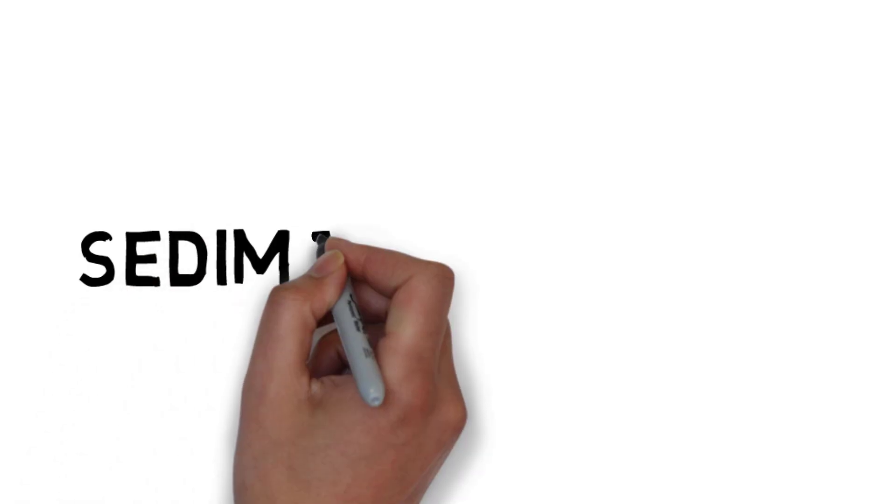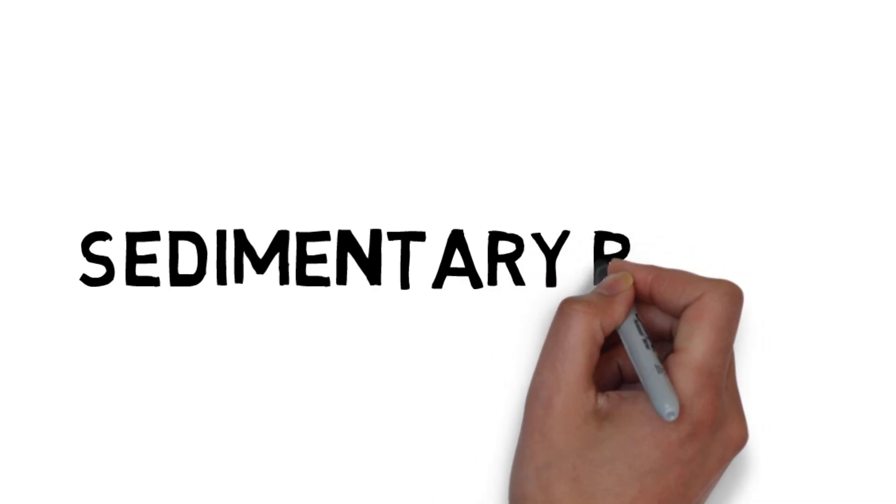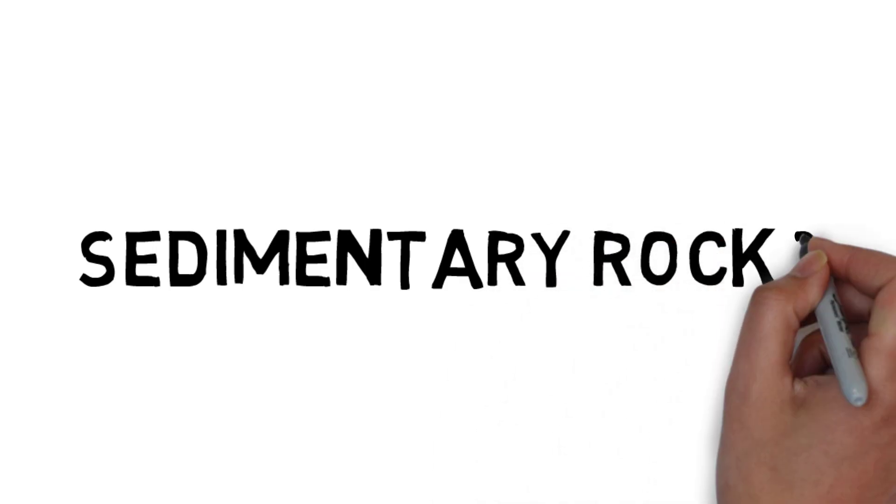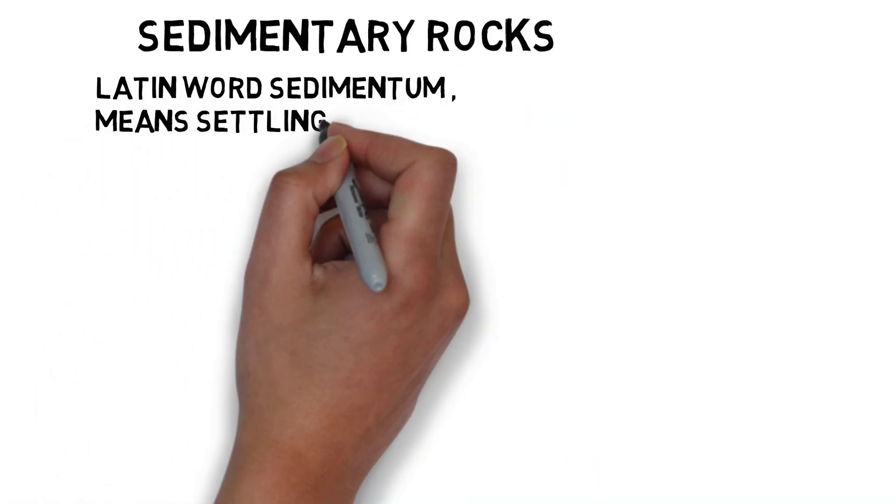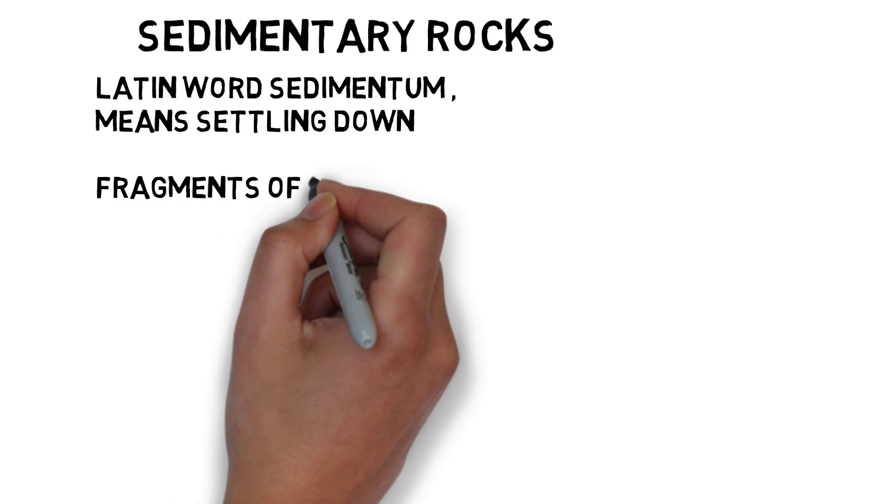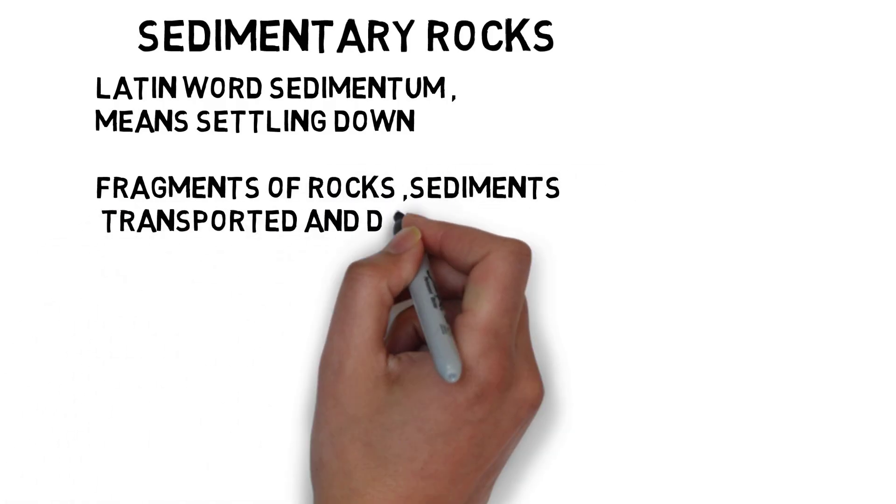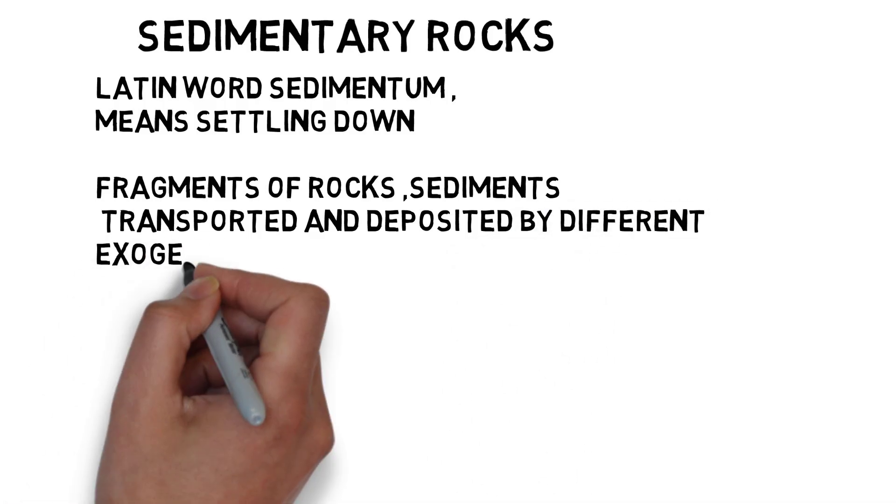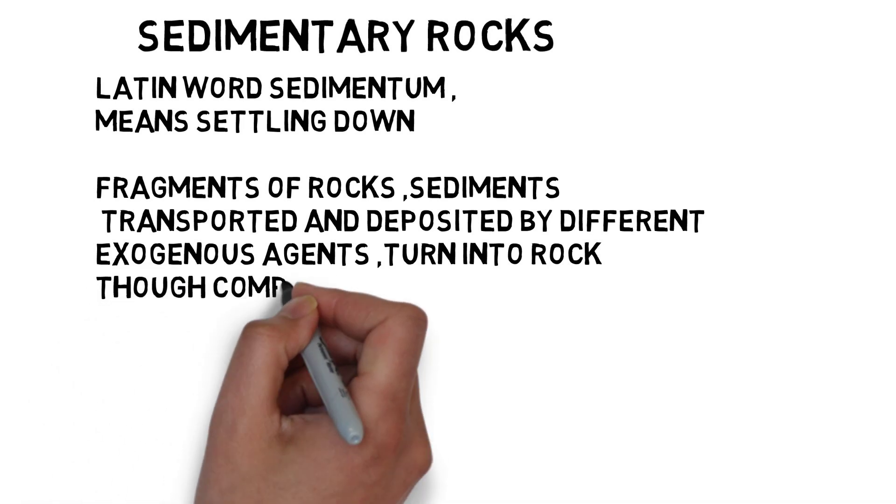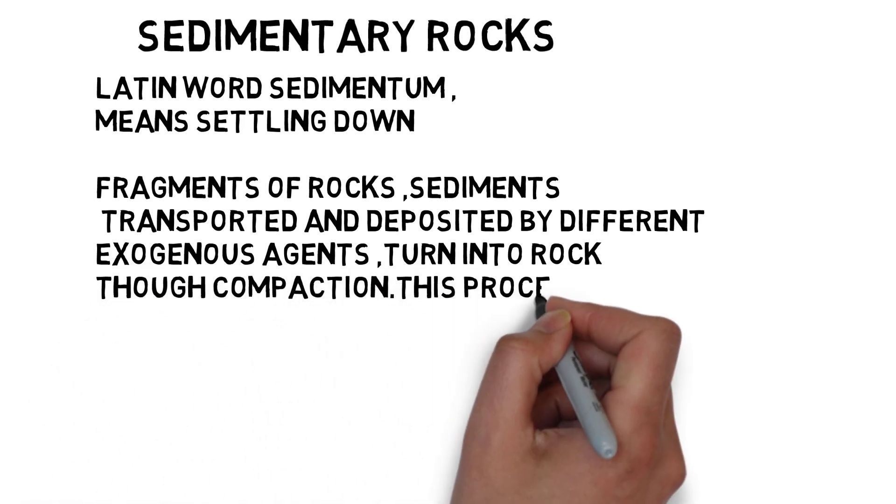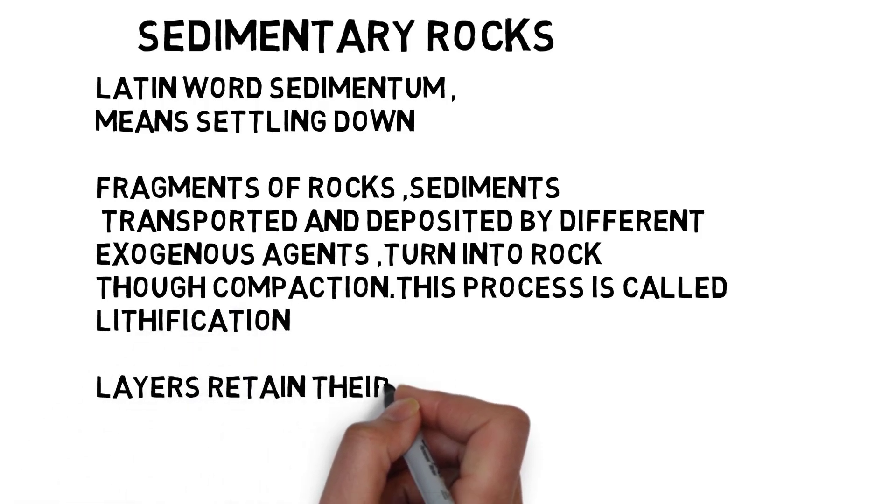Now let us come to the sedimentary rocks. Sedimentary is formed from a Latin word called sedimentum, which means settling down. It is formed from the fragments of rocks, sediments transported and deposited by different exogenous agents which turn into rock through compaction. This process is called lithification. Years of deposition, layering by layering, their compaction, then cementation over the years turn them into sedimentary rocks.